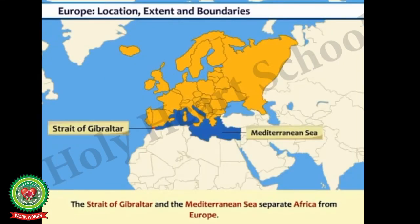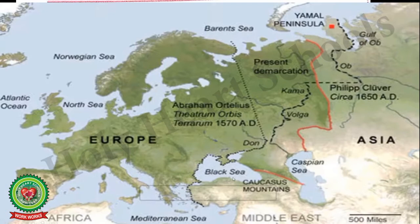Europe is separated from Africa by the Strait of Gibraltar and the Mediterranean Sea. Europe is called the peninsula of peninsulas as it has many peninsulas in it. Europe is a peninsula because it has the Ural Mountains as a land boundary in the east and water on three sides: the Atlantic Ocean to the west, the Arctic Ocean to the north, and the Mediterranean Sea to the south. The Strait of Gibraltar is a narrow piece of water body surrounded by land on two sides. Europe has excellent and highly developed harbors, where ships are kept and repaired.